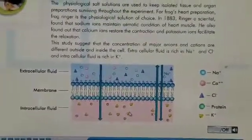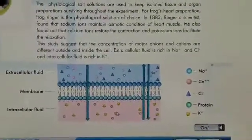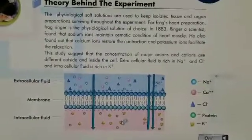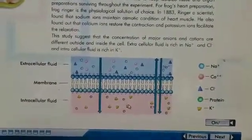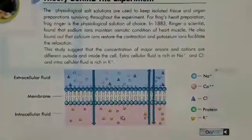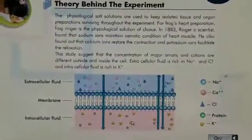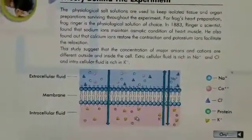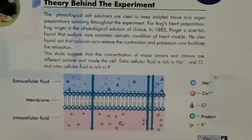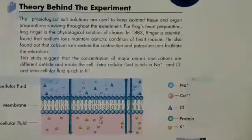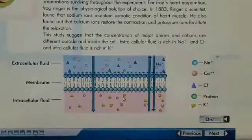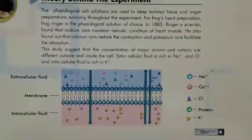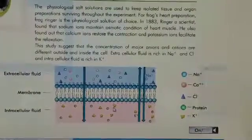These ions are very important for the activity of the cell. Sodium and calcium maintain the excitability of the cell — they are responsible for excitation. Potassium helps for relaxation. For normal cellular activity, contraction and relaxation must be simultaneous, and sodium, calcium, potassium, and chloride are all very important.